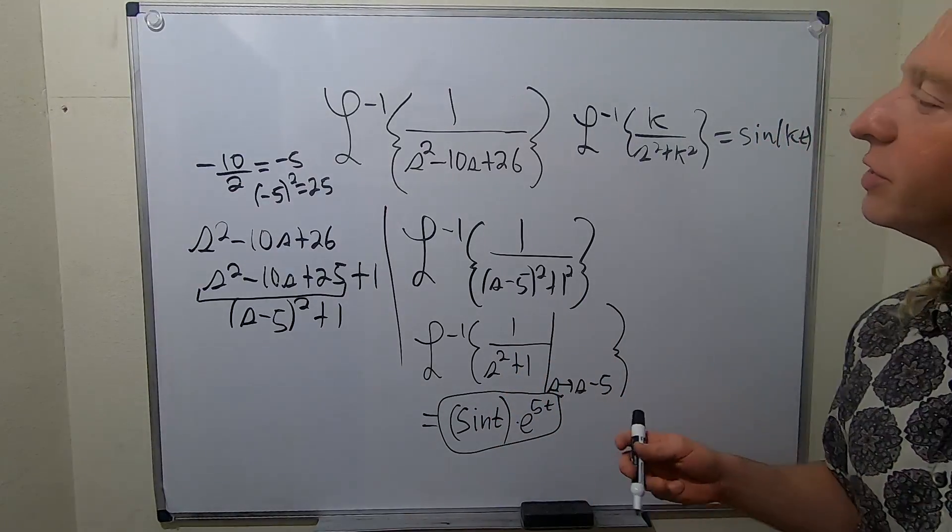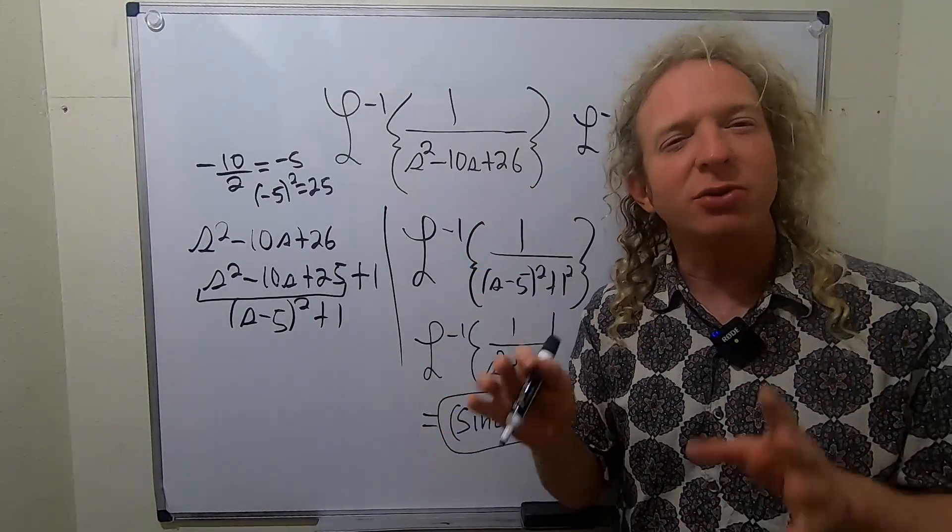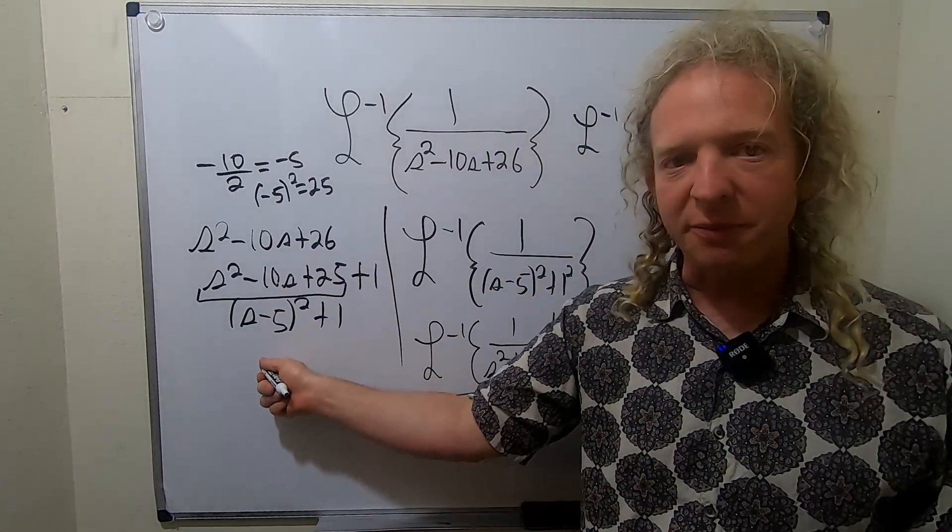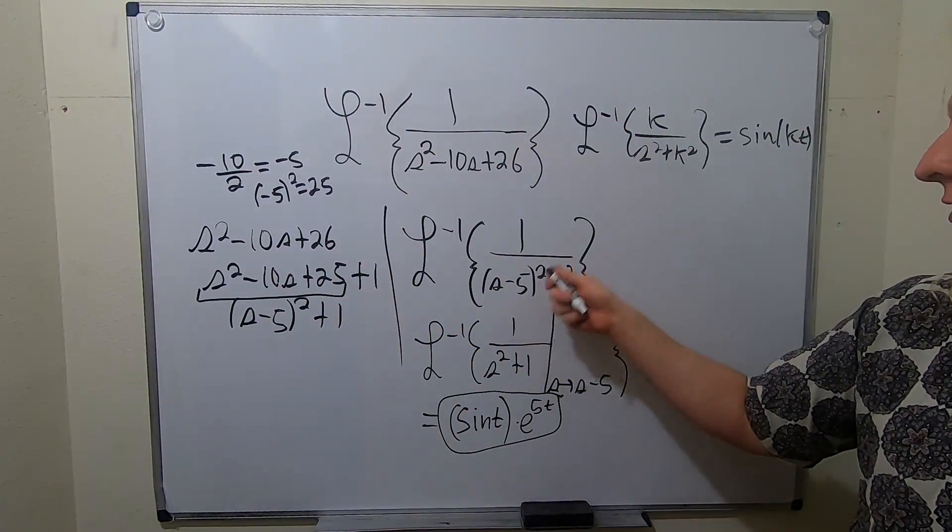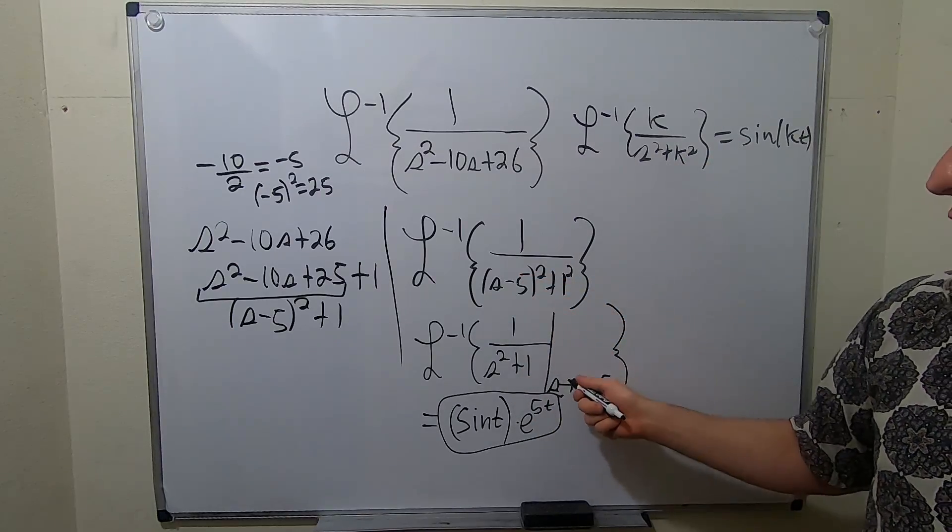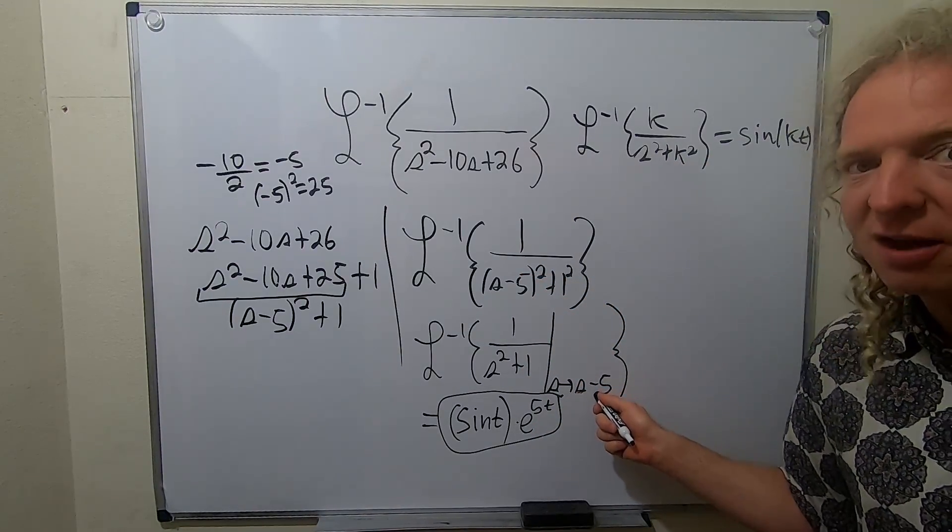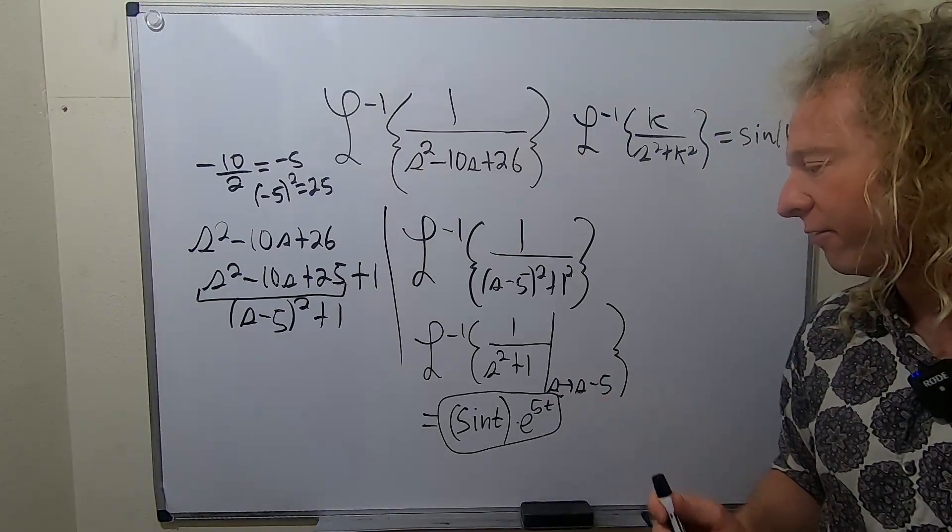So again, recap. First thing you want to do is you want to try to factor it always. Always try to factor first. If you can't factor it in your head, try completing the square. And then use the shift. Use the shift. And then when you use the shift, that gives you the e. That gives you the e. If it was s plus 5, you would have an e to the negative 5t.